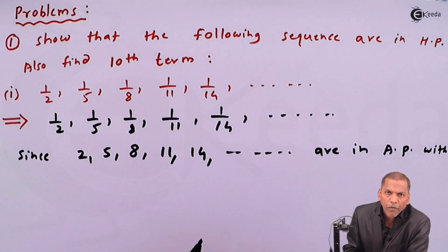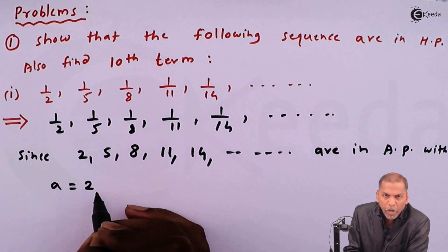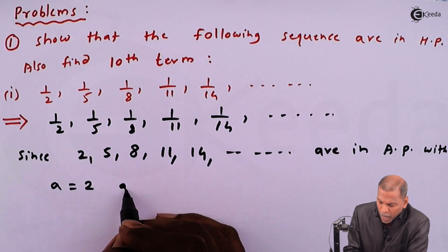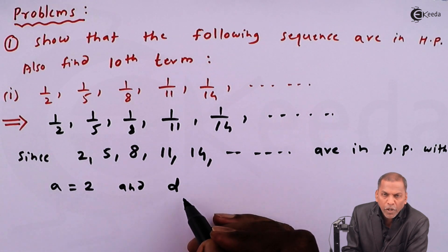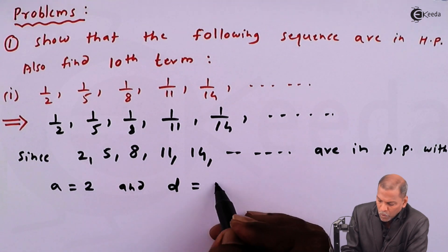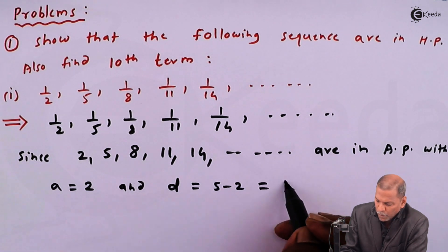With first term A is equal to two and the common difference D equal to five minus two is equal to three.